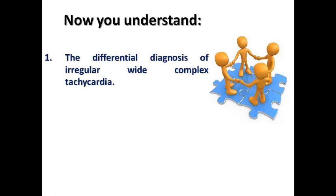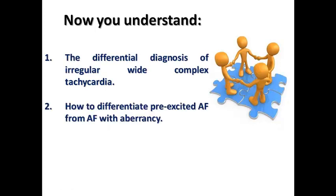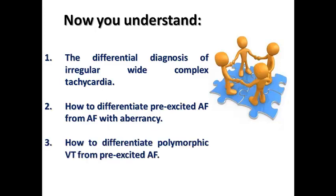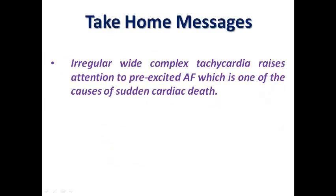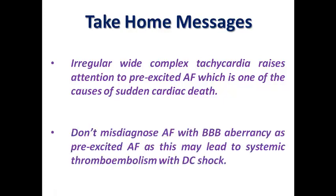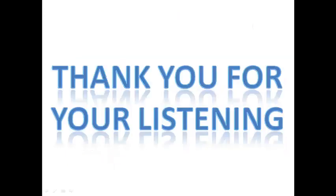At the end of our lecture, we understood the differential diagnosis of irregular wide complex tachycardia, how to differentiate pre-excited AF from AF with aberrancy, and how to differentiate polymorphic VT from pre-excited AF. Our take-home message: irregular wide complex tachycardia raises our attention to pre-excited AF, which is one of the causes of sudden cardiac death in young individuals. Don't misdiagnose AF with bundle branch block appearance as pre-excited AF, as this may lead to systemic thromboembolism with DC shock. It takes some effort, but you can differentiate pre-excited AF from AF with bundle branch block appearance. Thank you very much for listening.